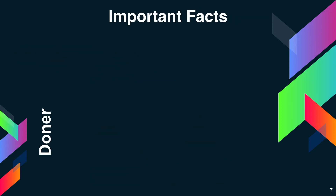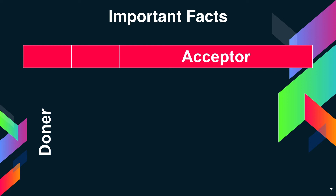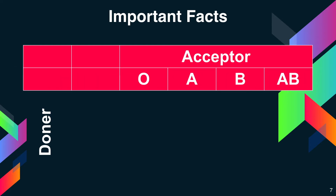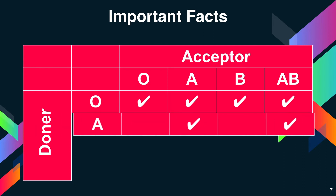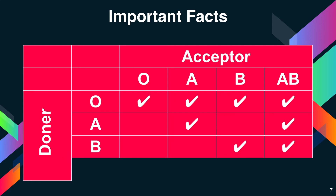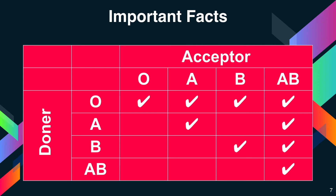Some important facts about blood groups: Blood group O is the universal donor and can donate blood to anyone. Group A can donate blood to A's and AB's, whereas group B can donate blood to B's and AB's. Group AB can donate blood to other AB's but can receive blood from all other blood group types.